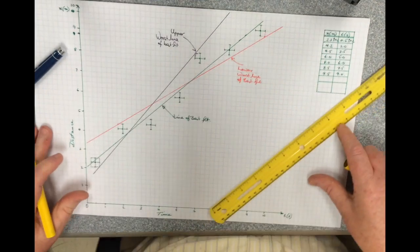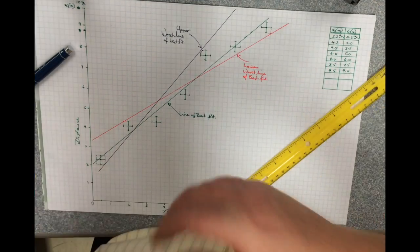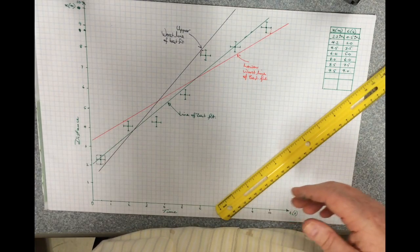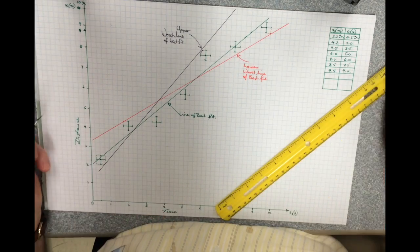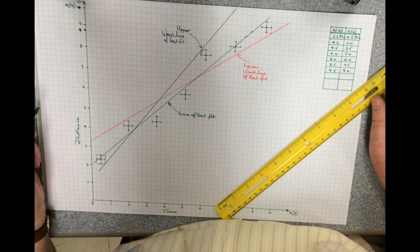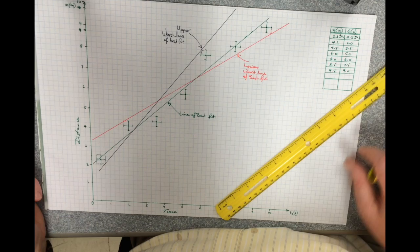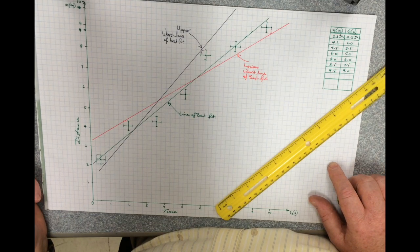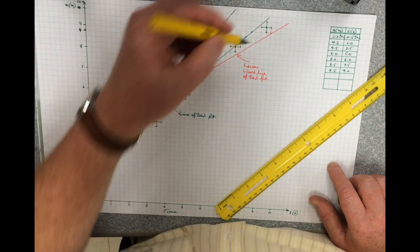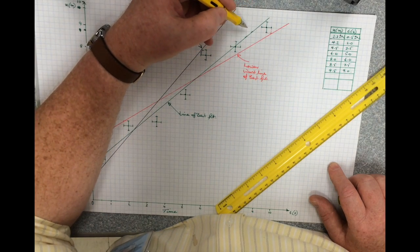Now what we have to do in each case is find the slope of each of these lines. When looking to find the rise over run to get the slope, we don't use any of the actual data points. What we do is we look for a point where the line crosses the intersection, hopefully at either extreme of the grid.